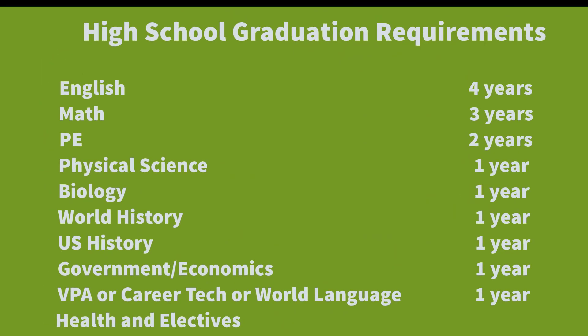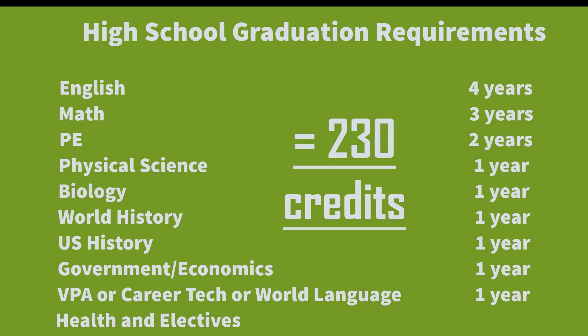Here are the high school graduation requirements. You can see that many of the requirements are the same as the A through G requirements. The biggest differences are when you get to visual performing arts, career tech, or world language. In that instance, you must have both a world language and a visual performing art. In addition, you must meet your 230 credits and not fail any classes in order to graduate on time.